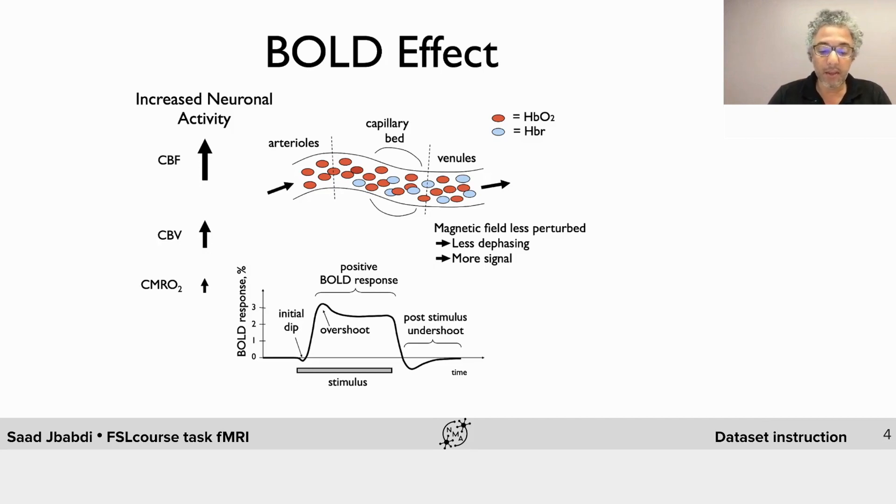This in turn produces changes in the local magnetic field near blood vessels which in turn affects the MRI signal. And as a result, the effect of change in neural activity through, for example, a stimulus produces this characteristic BOLD response shown at the bottom.